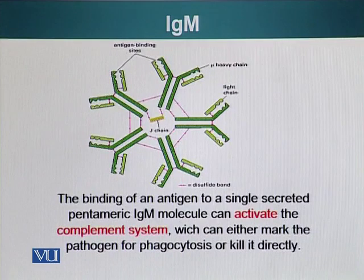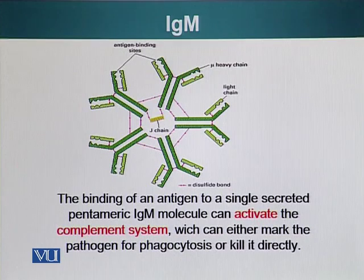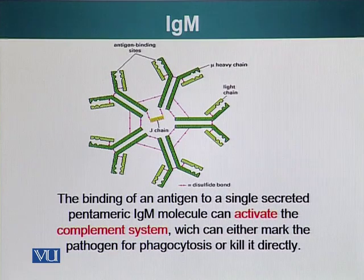The binding of a single antigen to a secreted IgM pentamer can activate the complement system. The complement system is a group of secreted proteins that help or assist the immune response, which can either kill the offending pathogen directly or mark the pathogen for phagocytosis by phagocytic cells.